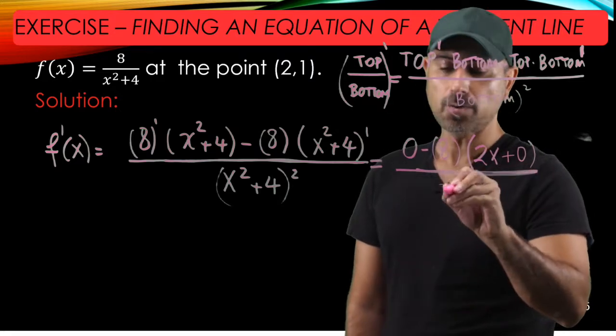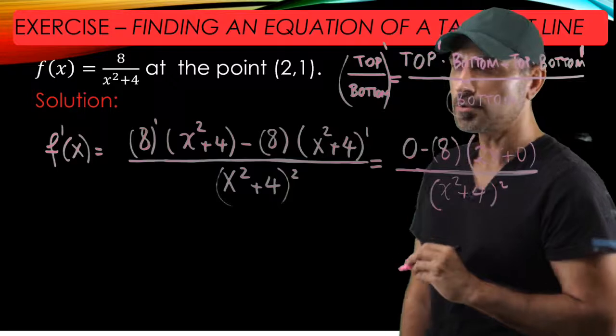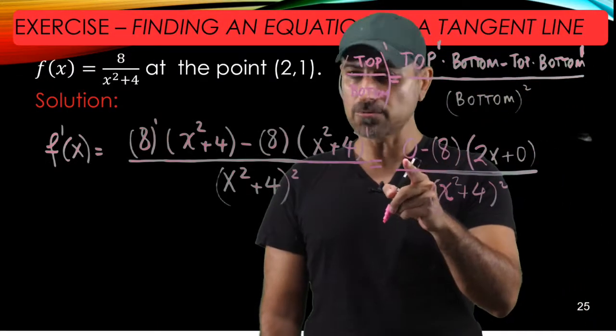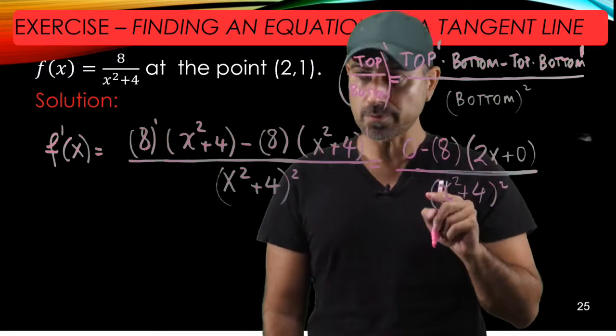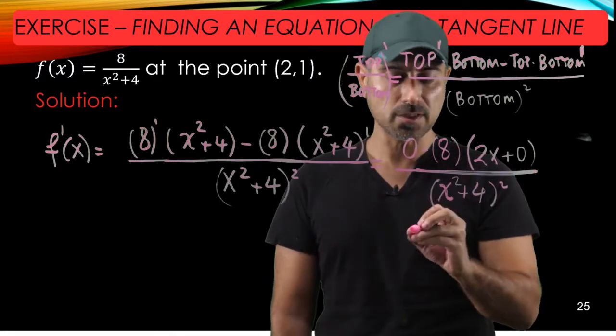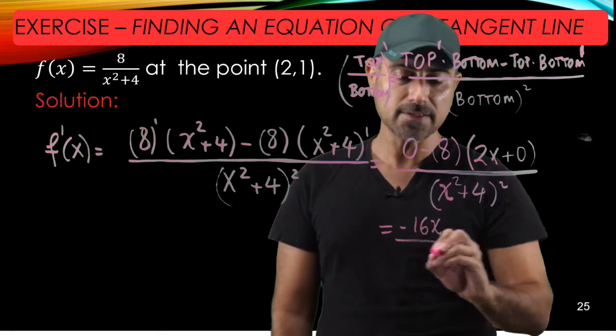Let's simplify further. So I have 0 here, and then this 8 is a constant in front of the parentheses. We distribute that over, so it's minus 16x divided by x squared plus 4 squared.